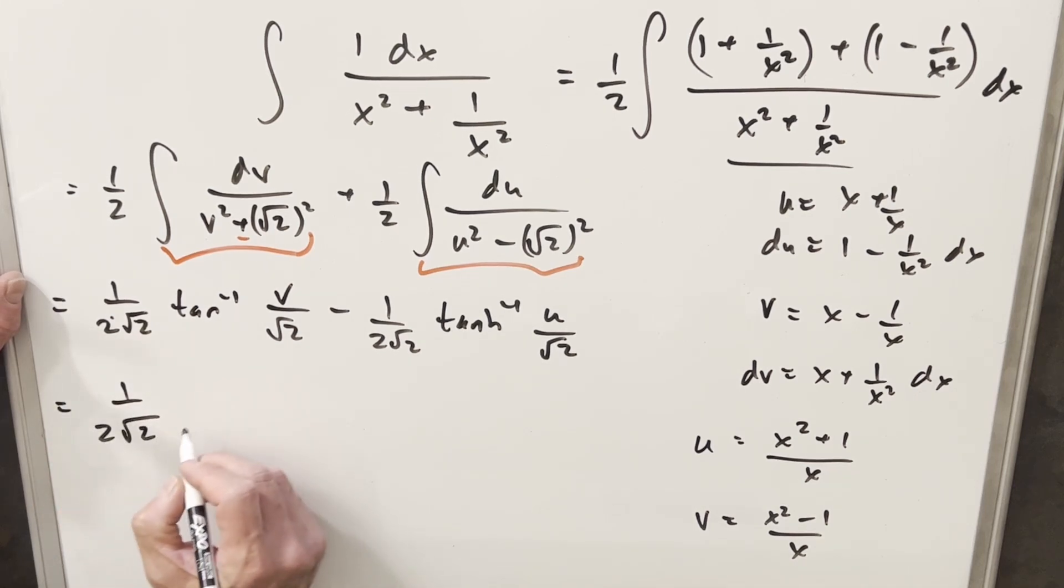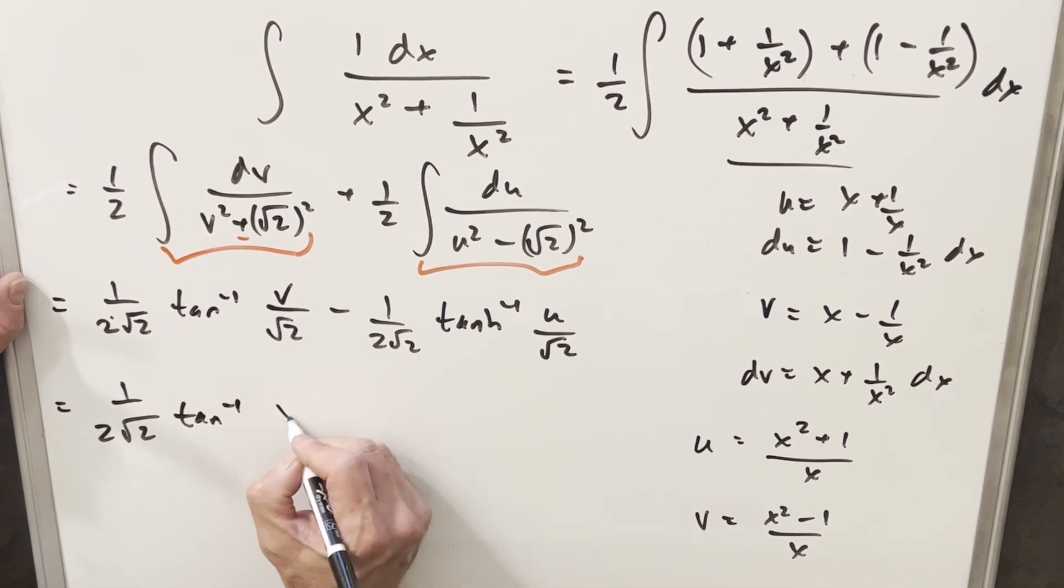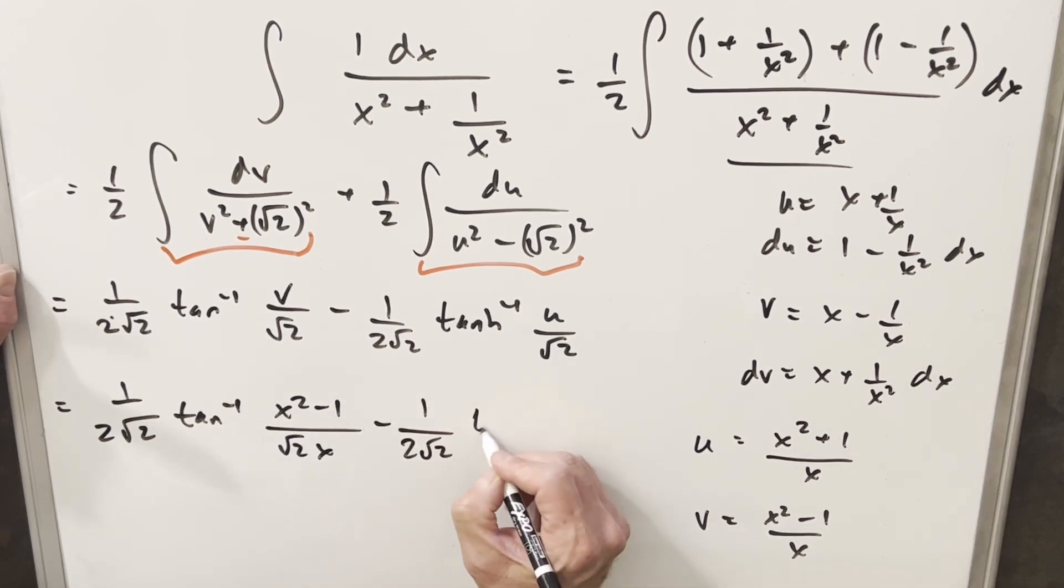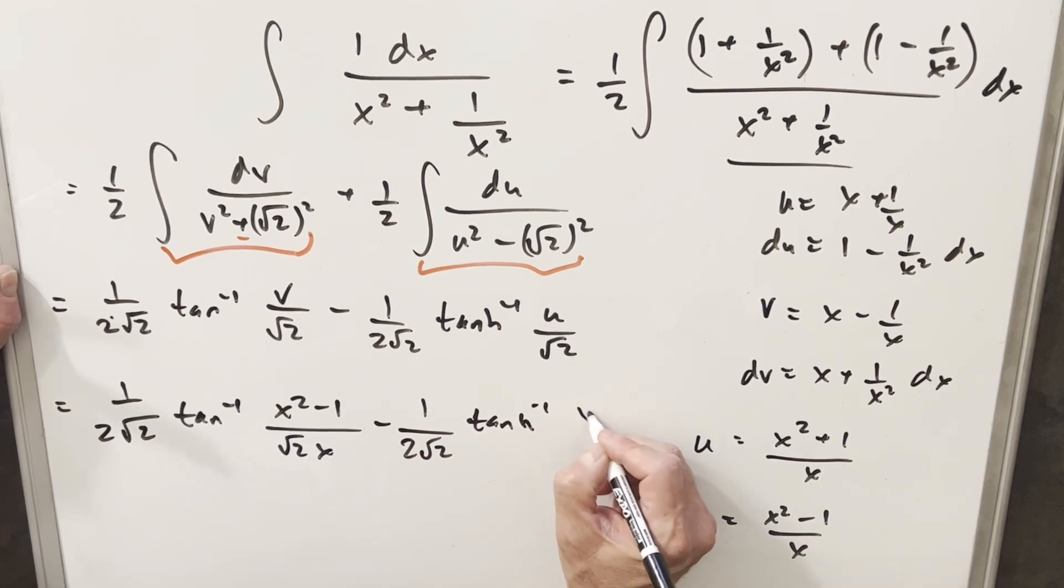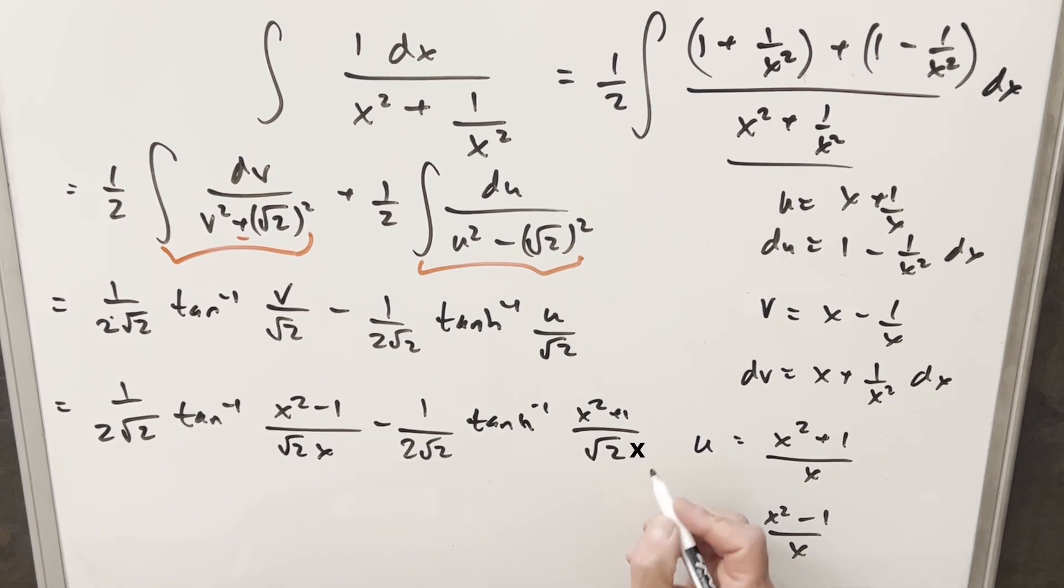And so here we're going to have 1 over 2 square root of 2, arctan, our v value is going to be x squared minus 1, keep my square root of 2. Minus 1 over 2 square root of 2, tanh inverse, our u value, which is going to be x squared plus 1 over square root of 2. I'll put a plus c on the end, squeeze it in there, and that's it.